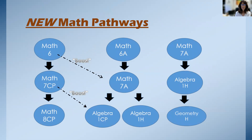This slide shows the different pathways for math in middle school. If a student starts in Math 6, they will move into Math 7 and then Math 8 CP. A student who starts in Math 6A will move into Math 7A and then either Algebra 1 CP or Algebra 1 Honors. A student in Math 7A as a sixth grader will move into Algebra 1 Honors and then Geometry Honors as an eighth grader. Students who want to jump to a higher level can take the boost camp — from Math 6 into Math 7A, or a seventh grader who wants to jump into Algebra 1 can also take the boost camp.